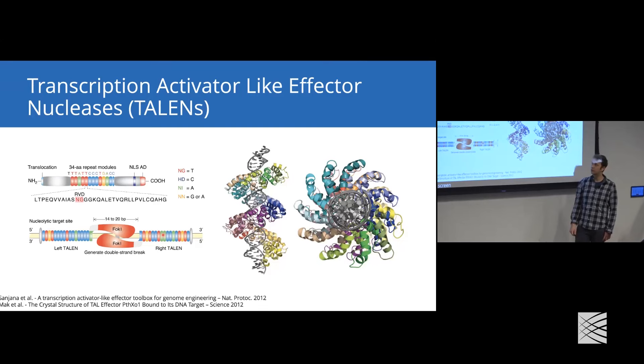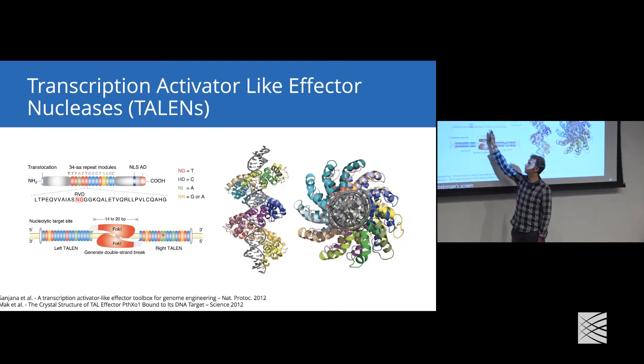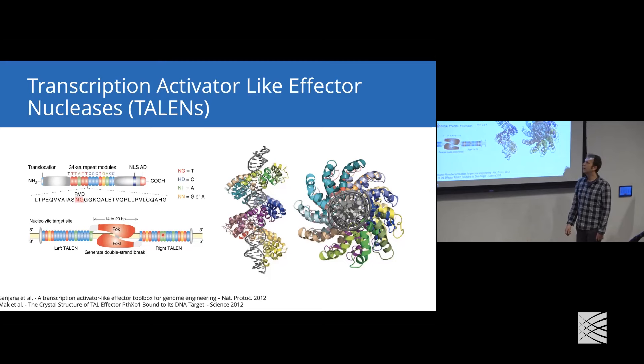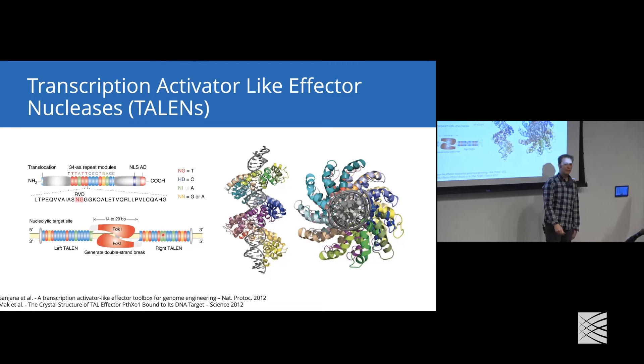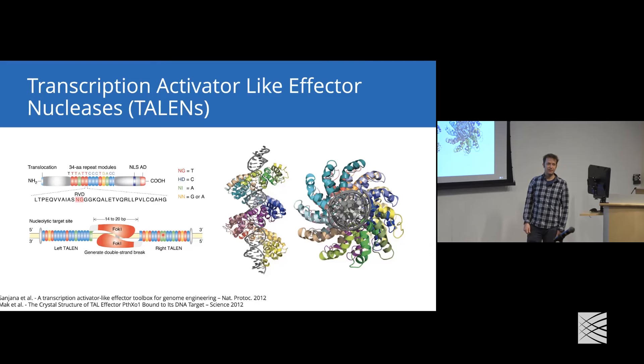In contrast to zinc fingers, TALs are guided by repeats. Each of these repeats forms contact with one single nucleotide, making it much more straightforward to engineer these proteins. Each of these 34 amino acid repeats has a region called RVD, or repeat variable dinucleotide diresidue, which specifies which nucleotide this domain would bind.